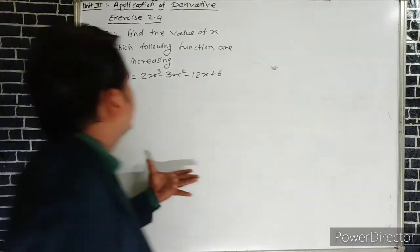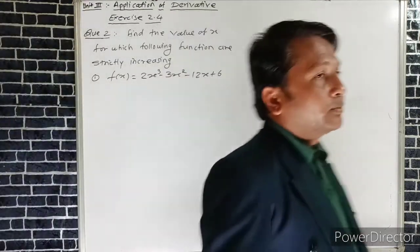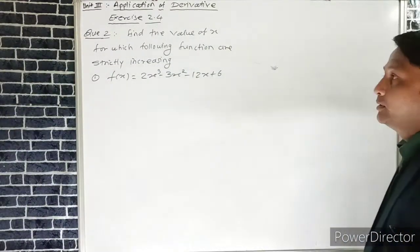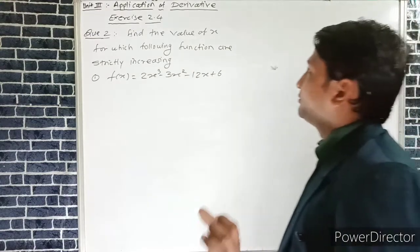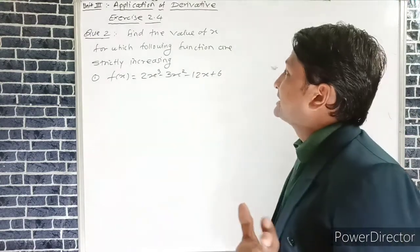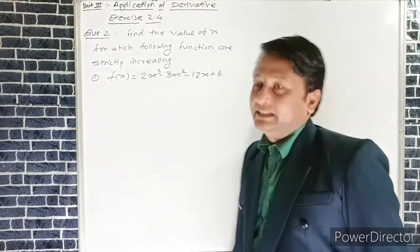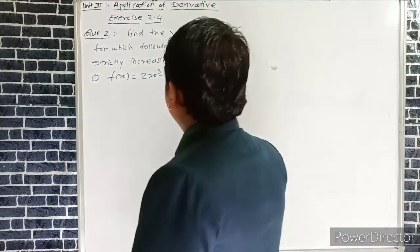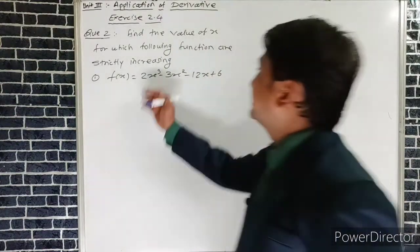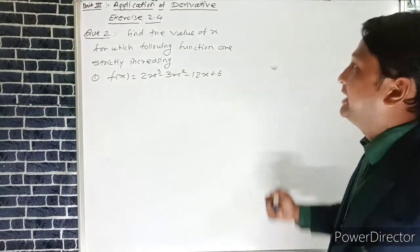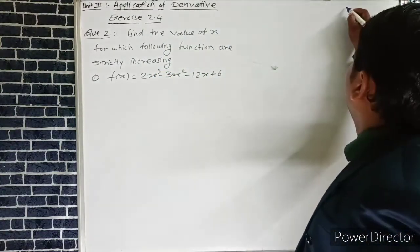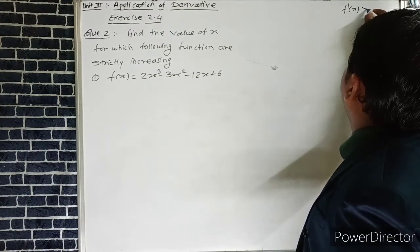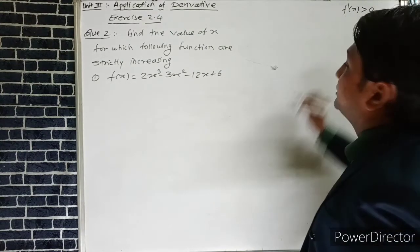Question number 2 in Exercise 2.4: Find the value of x for which the following functions are strictly increasing. By the given condition, if the function is strictly increasing, then f'(x) > 0. The first function is f(x) = 2x³ - 3x² - 3x + 6.